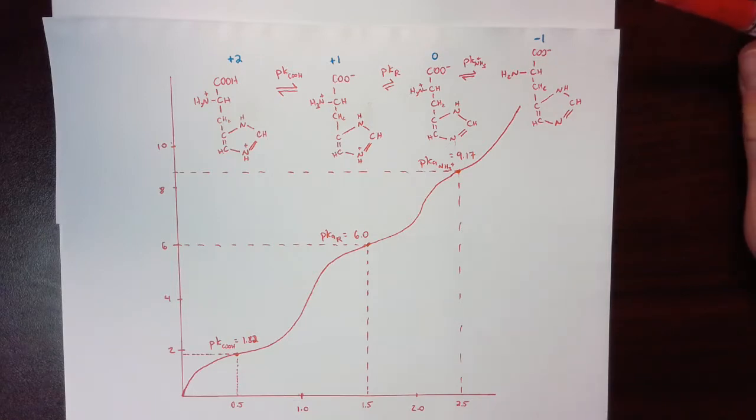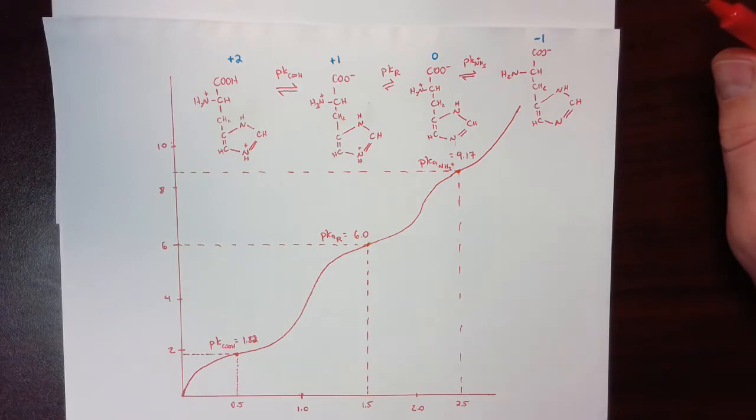So the first thing that we need to notice about this amino acid is that there are three pKa's. That means there are three protons that can be lost from this amino acid. And the first proton to be lost or to be given up by an amino acid in all amino acids is the carboxylic acid on the backbone.